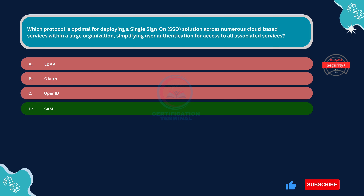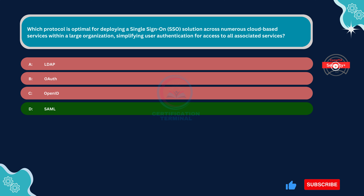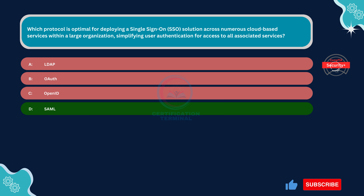Option C, OpenID, is incorrect. OpenID is an open standard and decentralized authentication protocol that allows users to be authenticated by certain co-operating sites using a third-party service. While OpenID facilitates single sign-on, it's not as widely adopted or as standardized for enterprise SSO solutions as SAML. SAML offers more comprehensive support for enterprise use cases, stronger industry support, and better interoperability, and is often preferred for enterprise deployments.